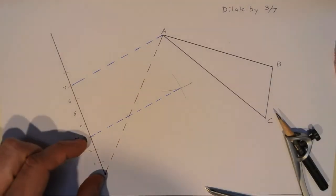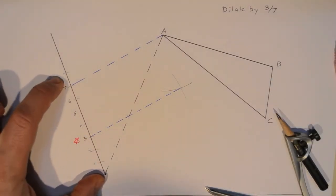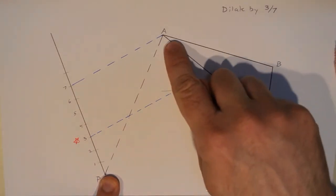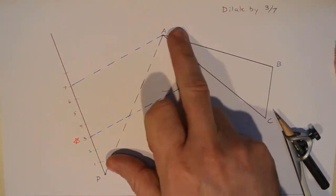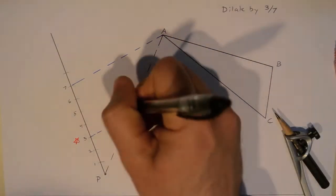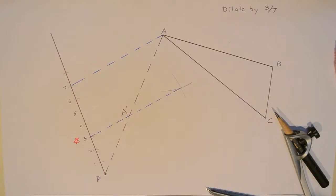Think about what's going on. This is three to the whole seven, which means this piece here is three to the whole seven. Well, that's three-sevenths. That's exactly what I'm looking for in this dilation. So that point right there is going to be my A prime, and that really wasn't that bad.